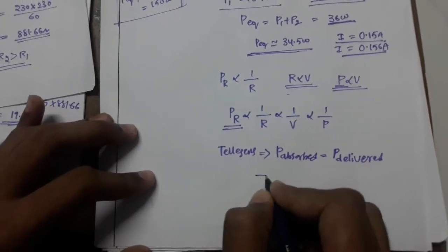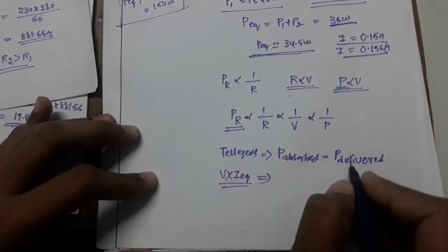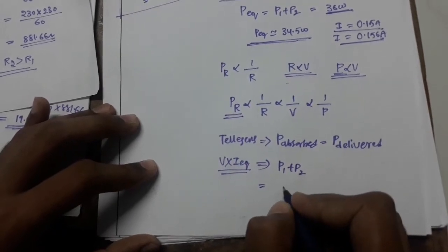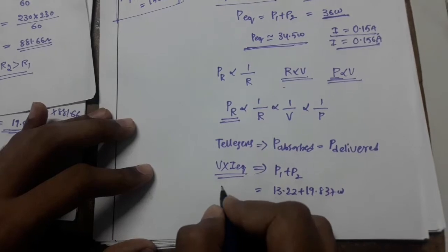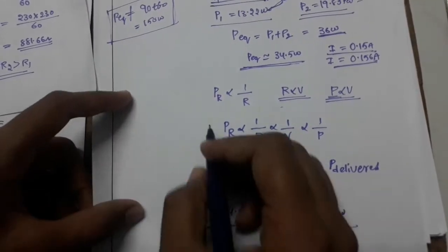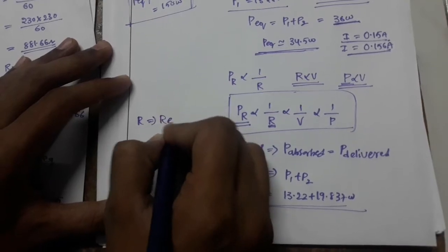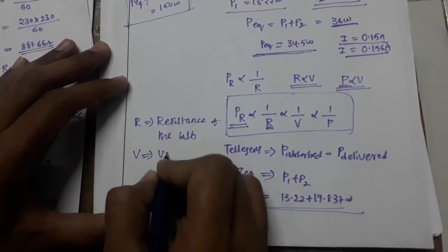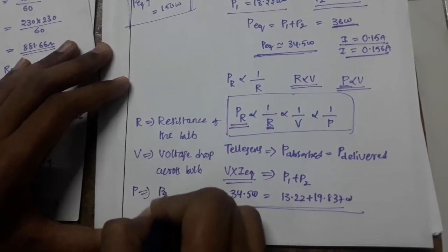So by Tellegen's theorem, V × I, the equivalent power equals the power delivered. Power delivered equals P1 plus P2, that is 13.22 plus 19.837 watts, which equals 34.5 watts. Where R defines resistance of the bulb, V defines voltage drop across the bulb, and P defines power consumed by the bulb.